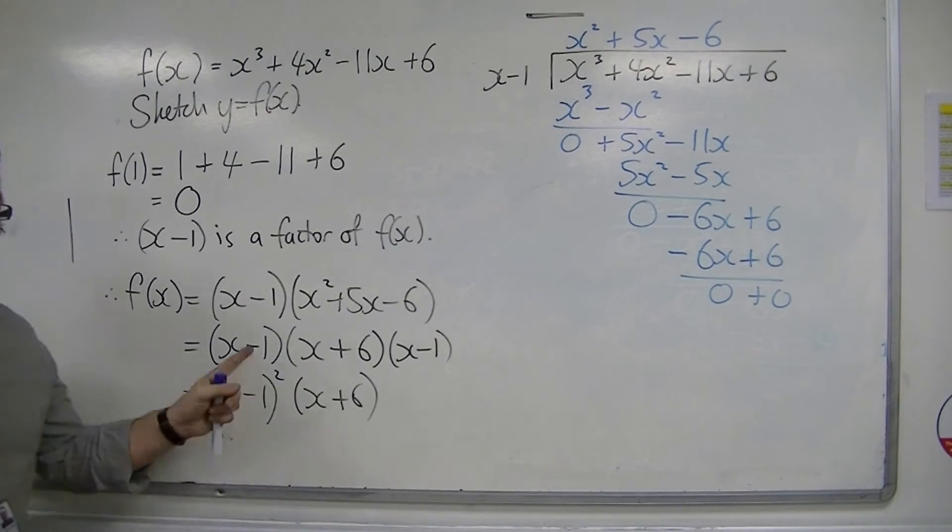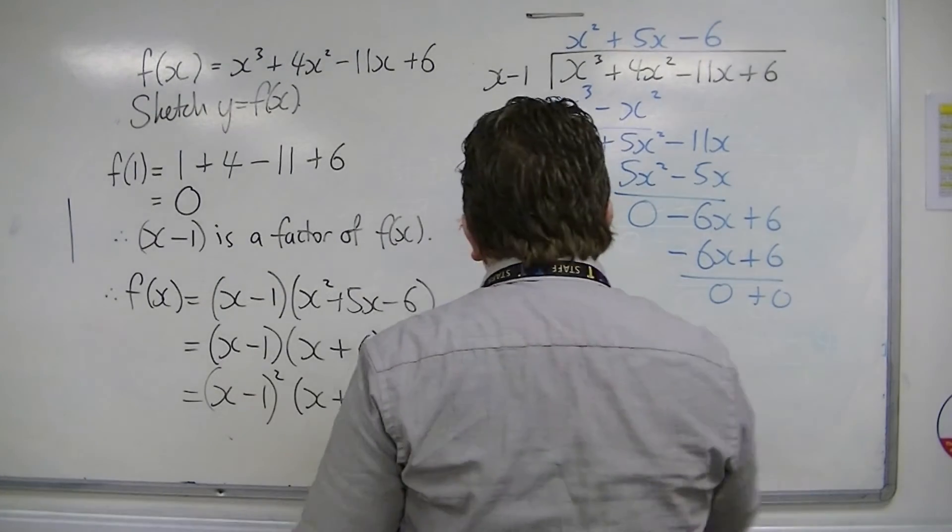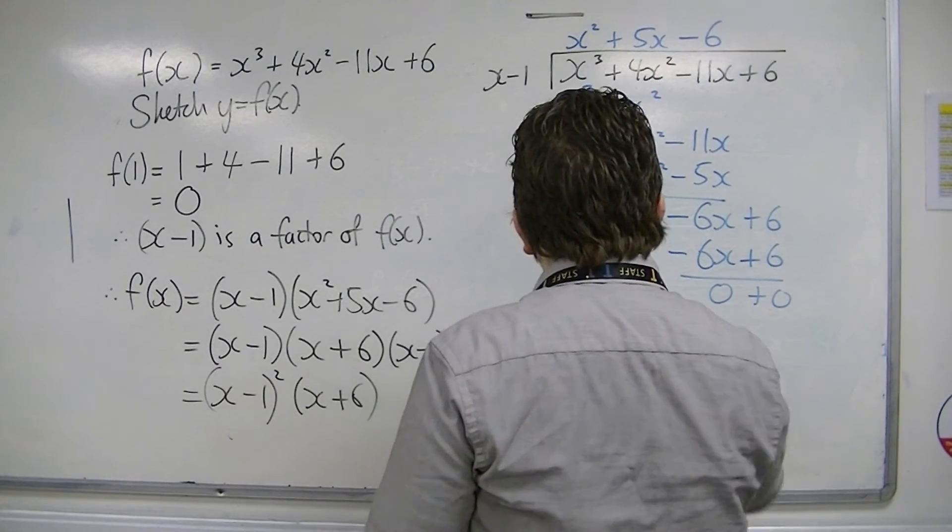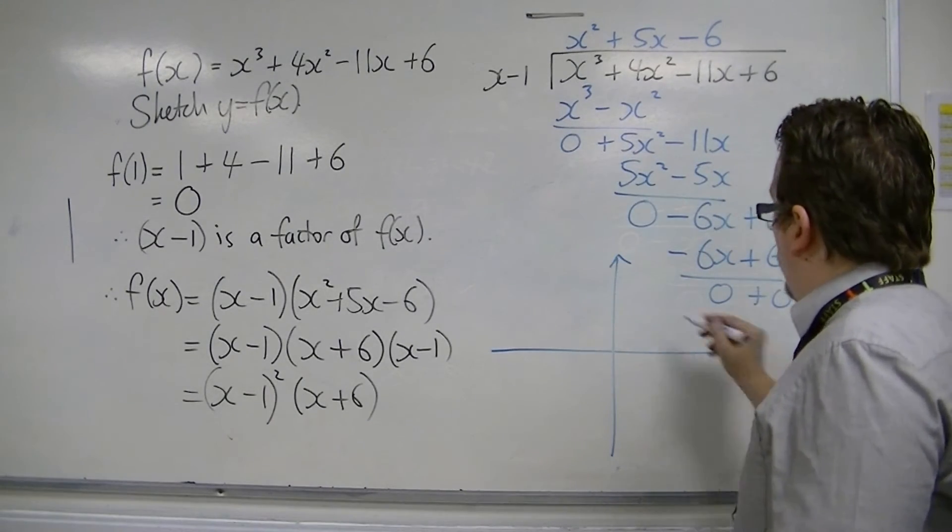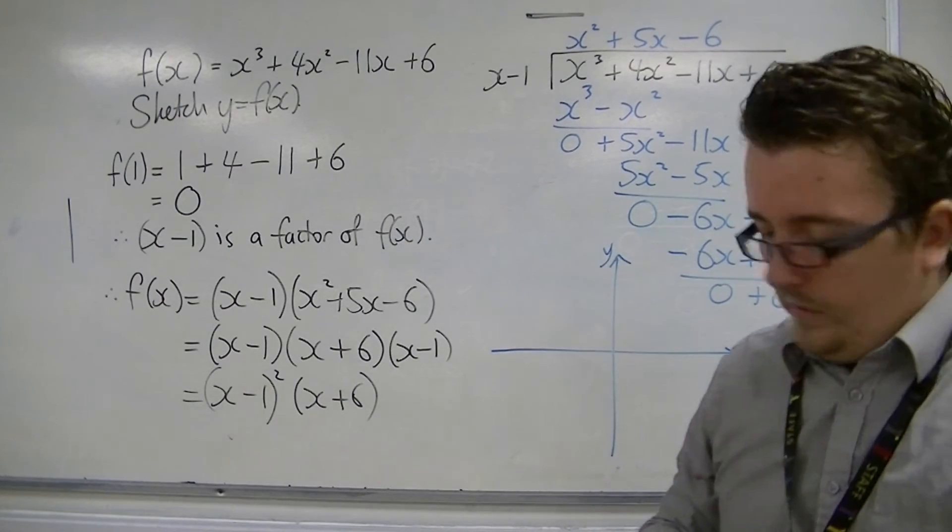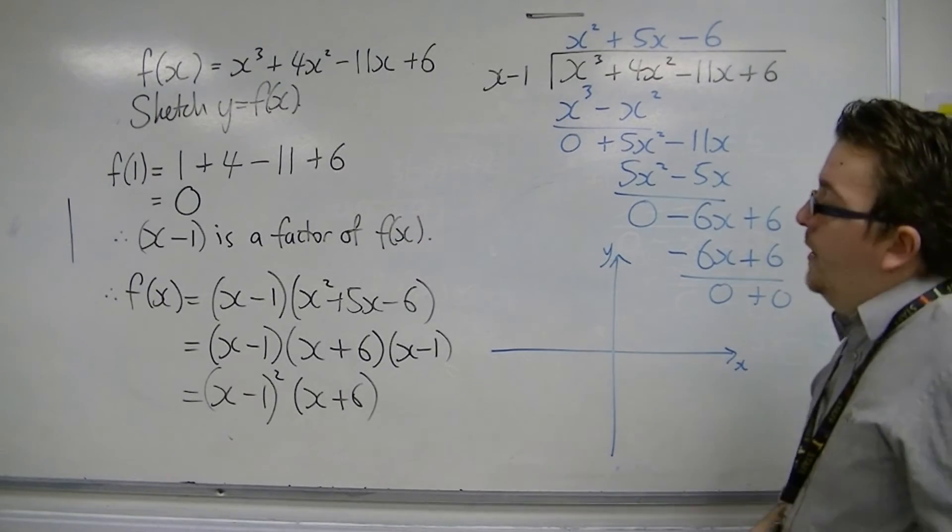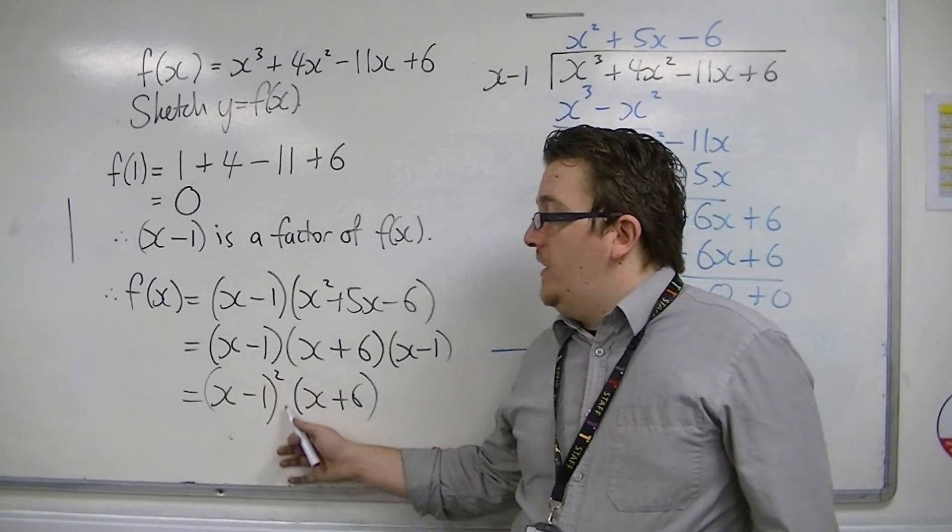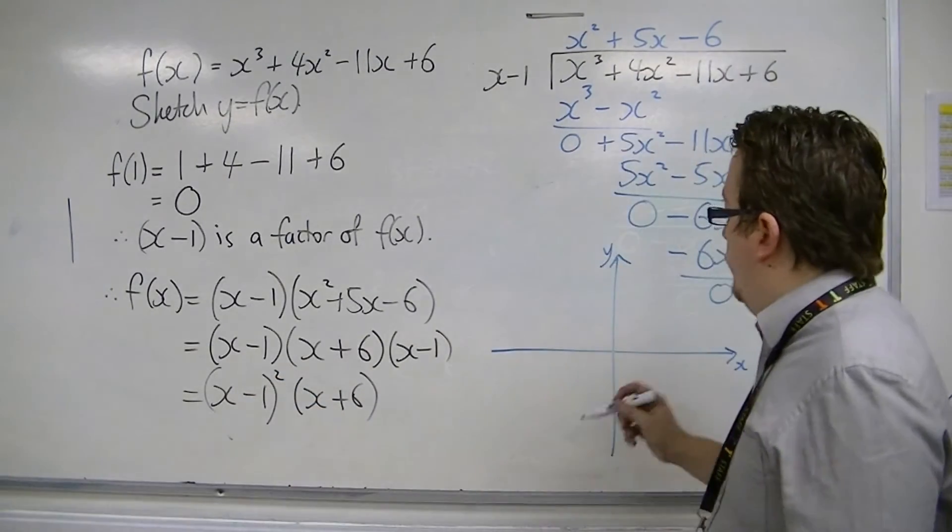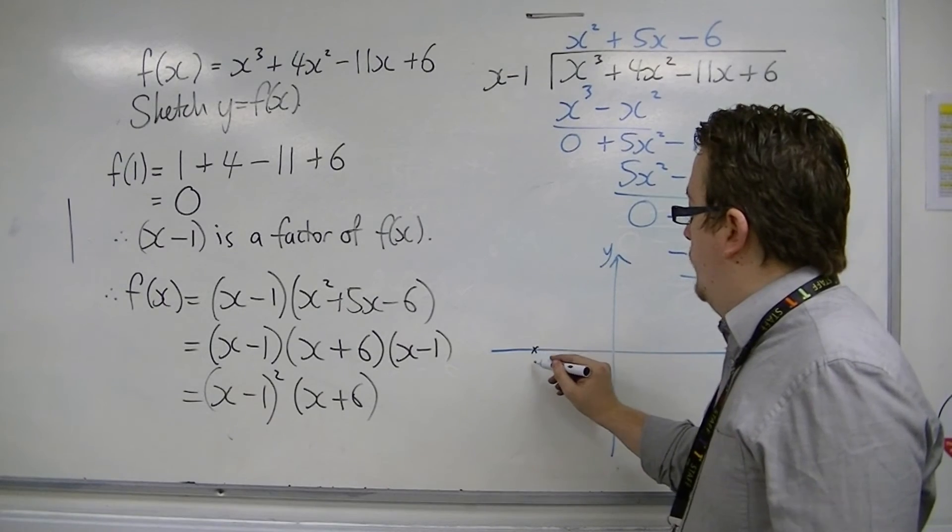And then we must sketch this curve. So we know that the cubic crosses the x-axis at 1 and minus 6. So it crosses it at minus 6,